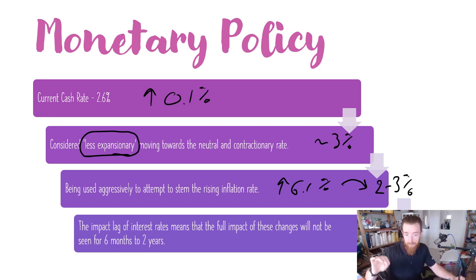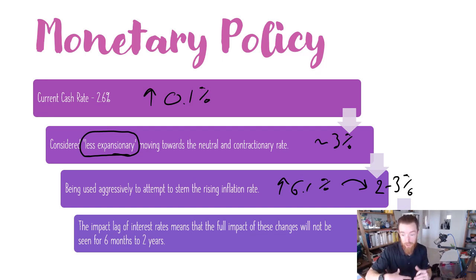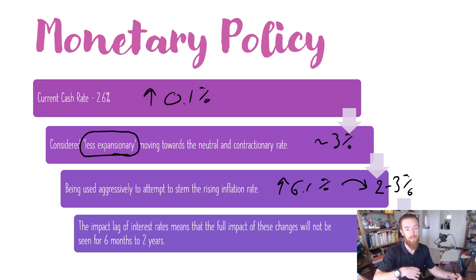The problem with this is there's an impact lag for interest rates, which means the full impact of these changes will not be seen for six months or up to two years. For example, I have a variable rate home loan, and although the interest rate does increase, my repayments often don't change for up to a month or two. And I don't really notice the impact on my discretionary income for a few months after that as I have to change spending habits. So although we are seeing how much the cash rate has increased, we haven't seen the full impact yet — and it may be too effective and move things aggressively in the opposite direction.